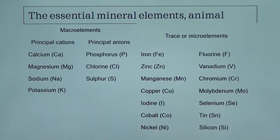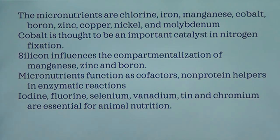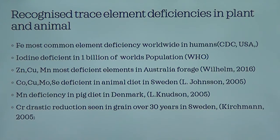One element worth noting is boron — it's not listed as an essential element but has some important functions. Some research shows it's a very good anti-cancer agent. A study in America found that when levels of boron are quite high, it decreases the incidence of prostate cancer by about 35%. That may not mean it's an essential element, but it's often recognized as such.